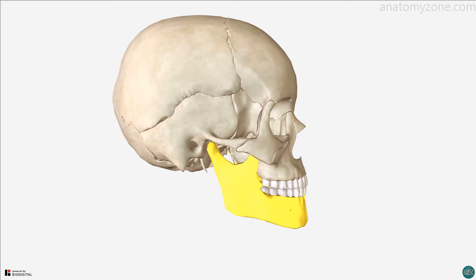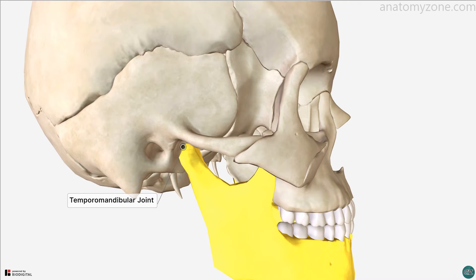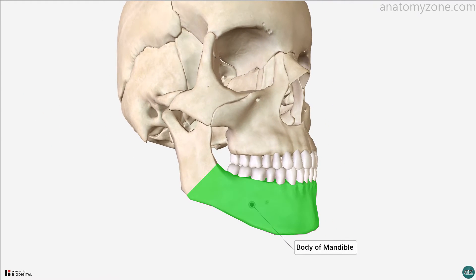The mandible articulates with the calvaria at the temporomandibular joint. The mandible consists of a central body and a ramus on either side. The ramus meets the body of the mandible at the angle of the mandible.